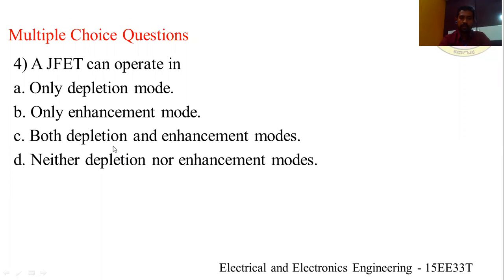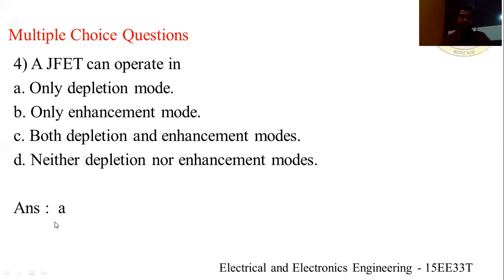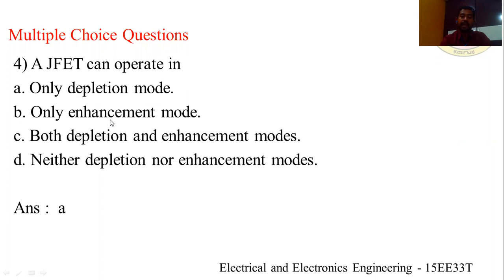Fourth question: a JFET can operate in — options are: (A) only depletion mode, (B) only enhancement mode, (C) both depletion and enhancement mode, (D) neither depletion nor enhancement mode. The answer is option A — only depletion mode. The junction field effect transistor can only operate in depletion mode because it has no enhancement mode. In MOSFETs, we have both depletion mode and enhancement mode.